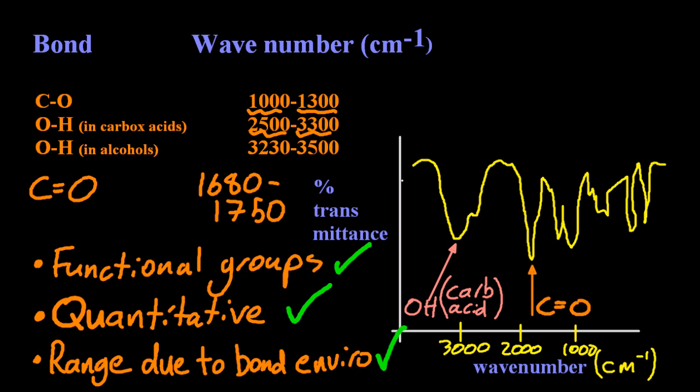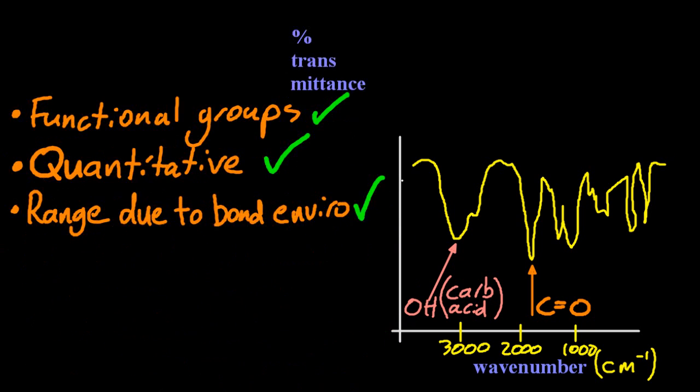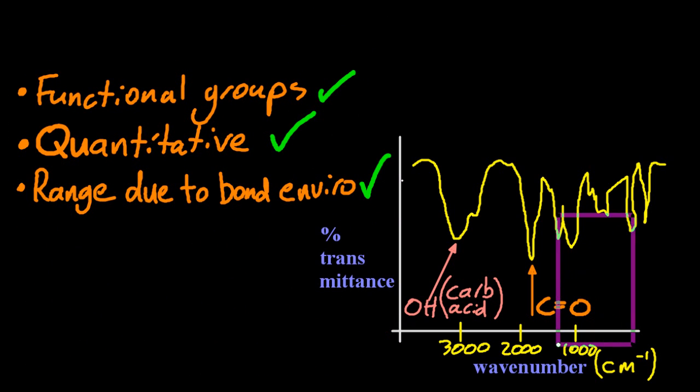And the range, well the range is due to the bond environments. That's why it isn't one specific number. Depending on what is near that bond that you're looking at, it's going to change the absorption slightly.